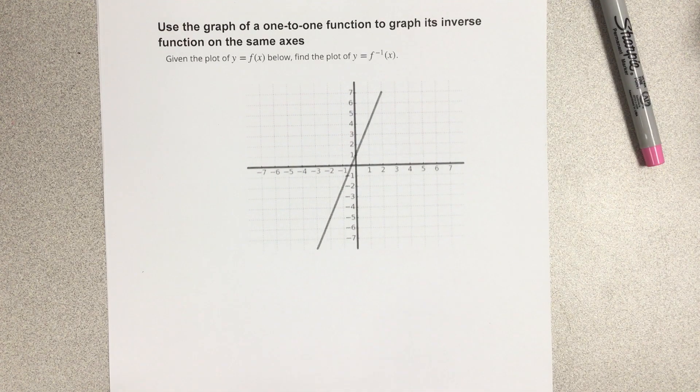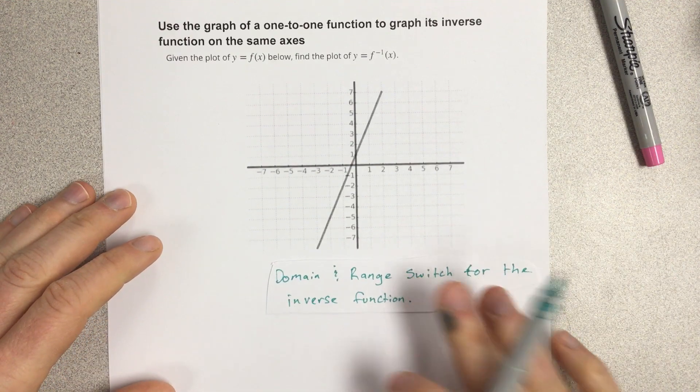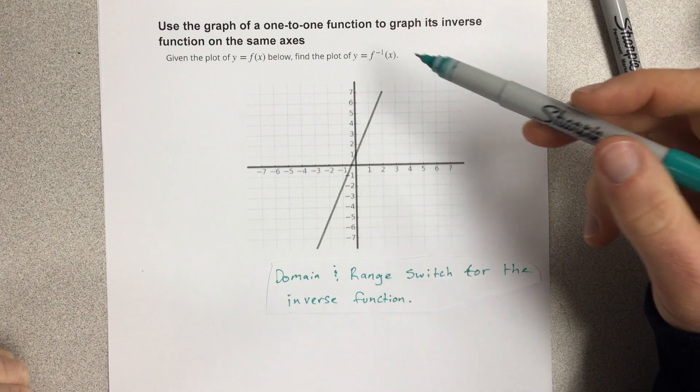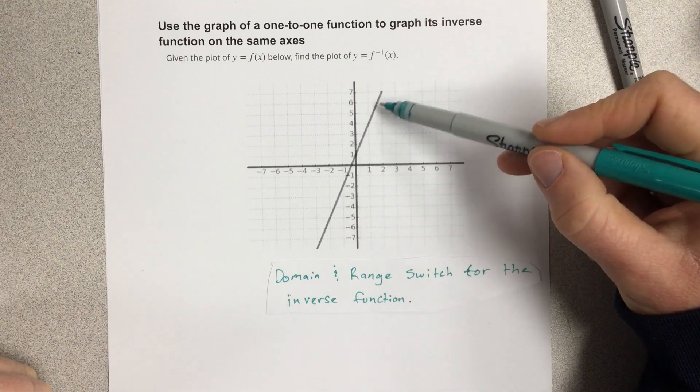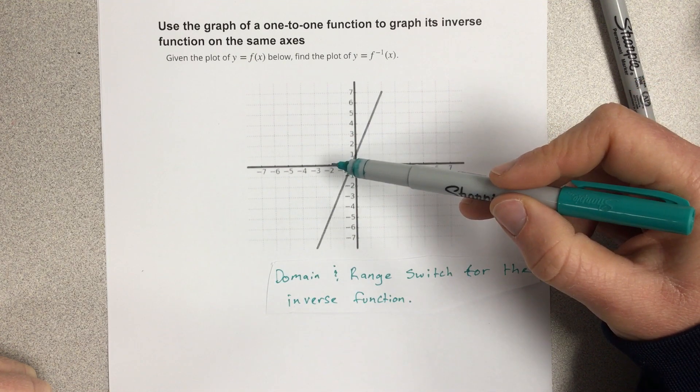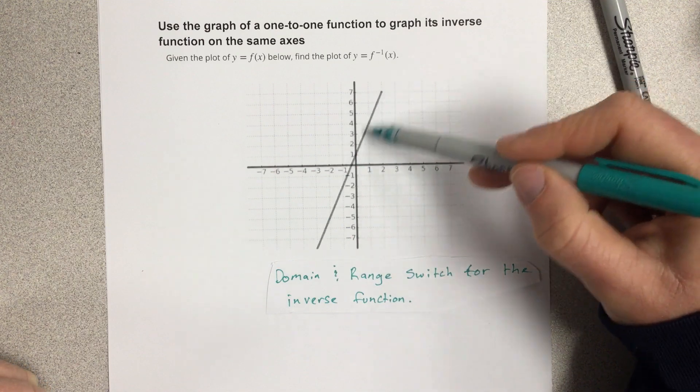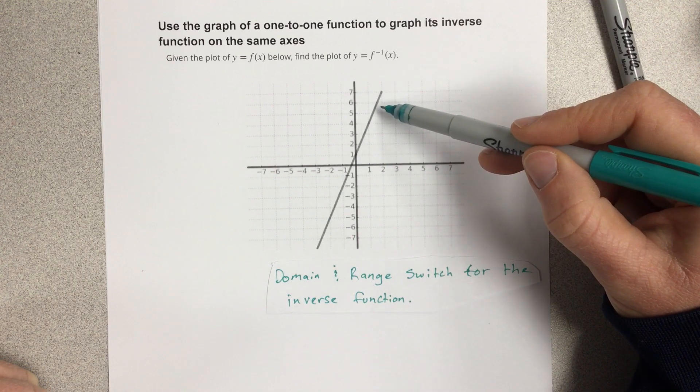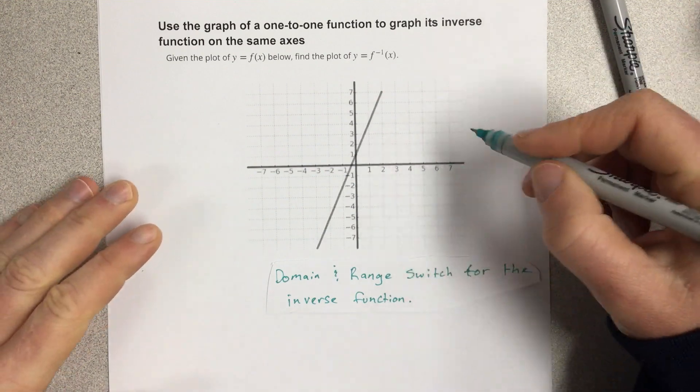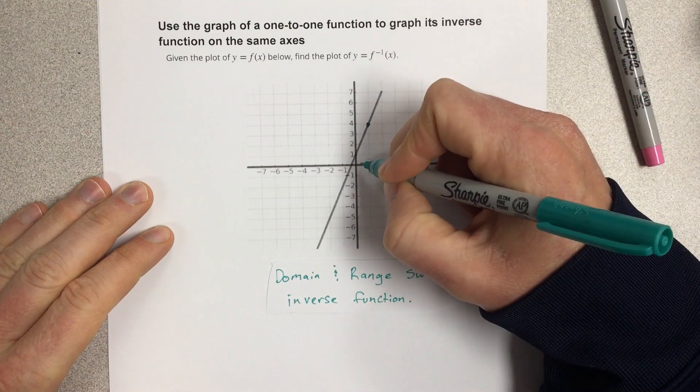If you remember what happens when you have inverses, the domain and range switch for the inverse function. Whatever your outputs are for this f of x function, those are going to be the inputs for the inverse function. And vice versa for the outputs of this function will be the inputs for the inverse function. We're going to write down some coordinates from this function.